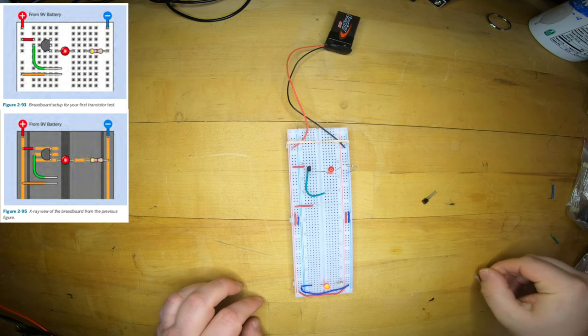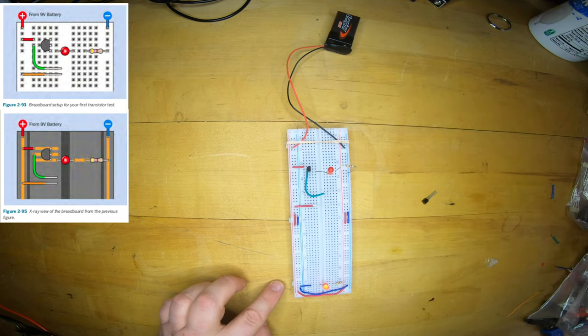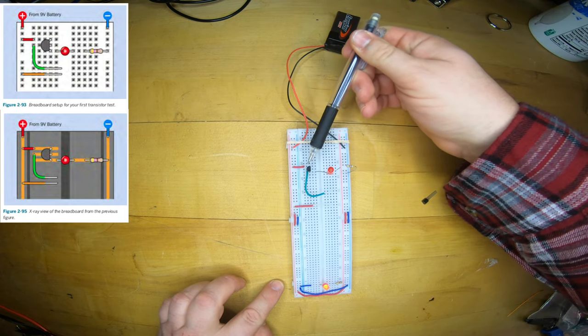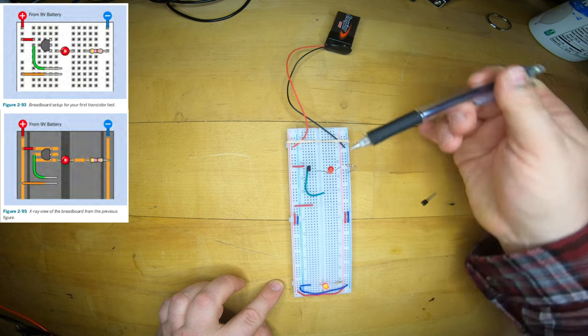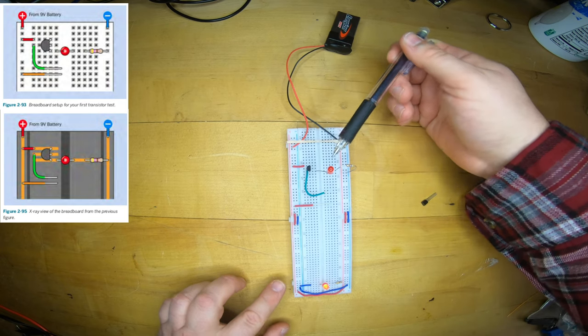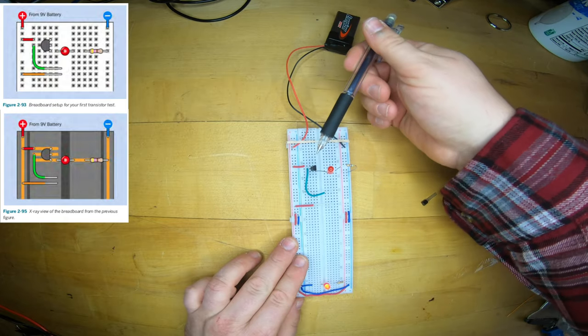It's got a very specific orientation and a very specific set of markings. Make sure you get the right device and that you always plug it the proper way into your circuit. The current in the transistor flows from the outer leg to outer leg, and it's controlled by the middle leg. And again, that orientation is really important to get it right.